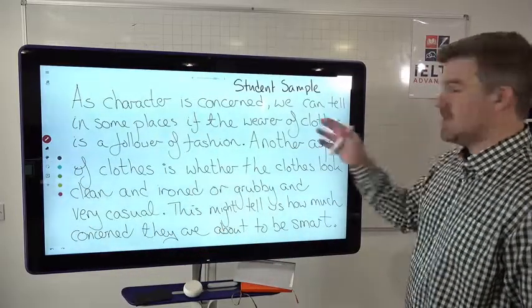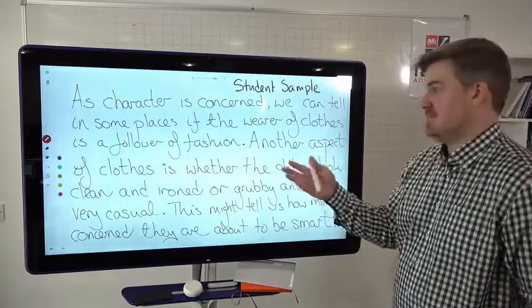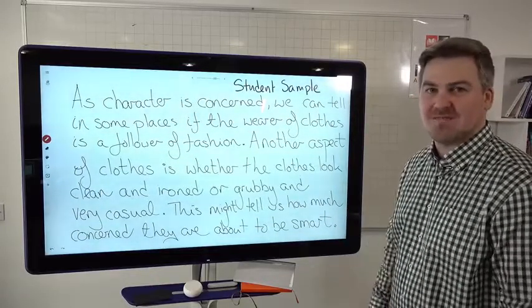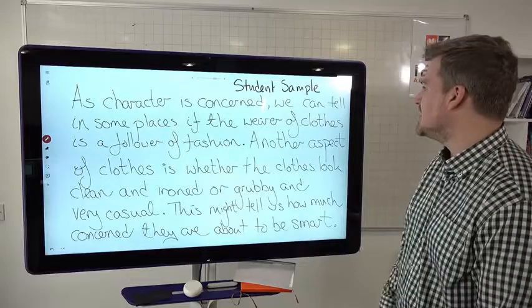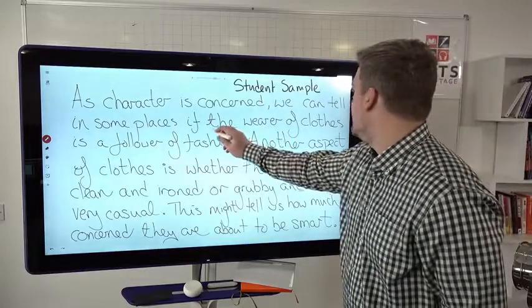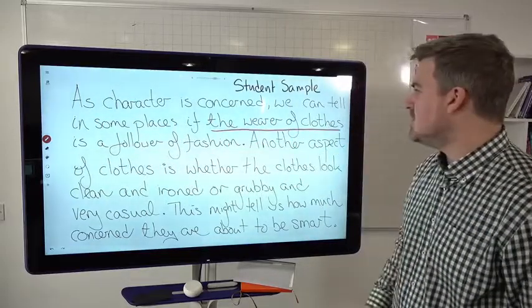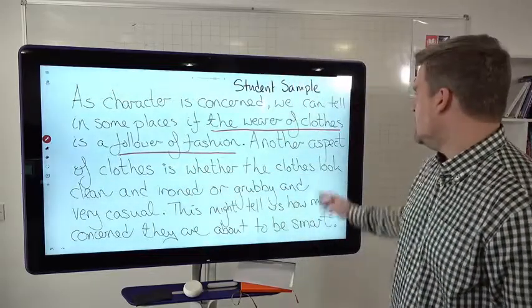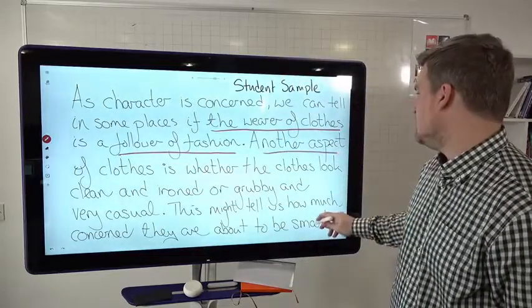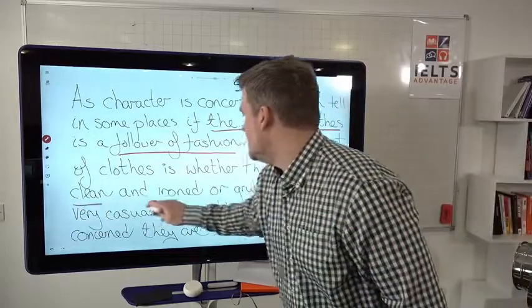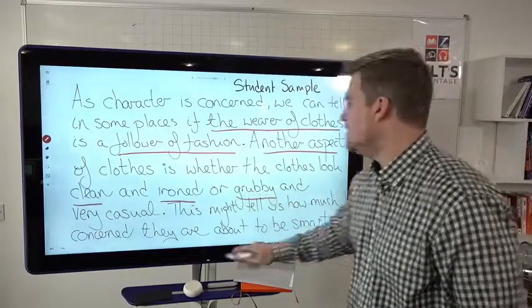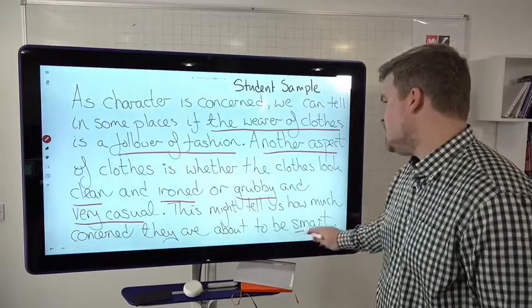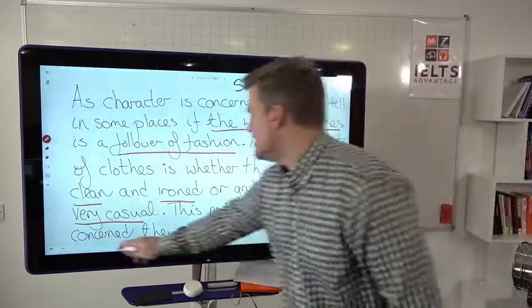As character is concerned, and there's some grammar mistakes and everything, because that's what most band seven essays would have. They would have some grammar mistakes. So we have the wearer of clothes, follower of fashion, another aspect, clean, ironed, grubby, very casual, smart, concerned.